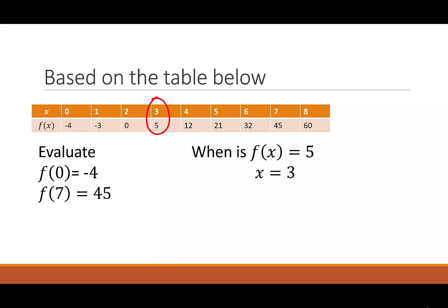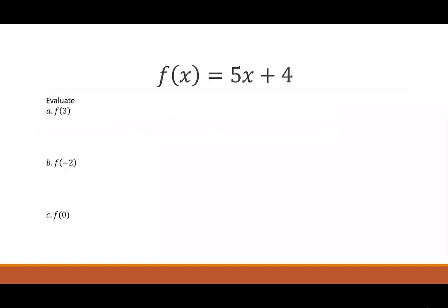When we switch to function notation, we're plugging in the values to determine our output. This time, I have f of x is 5x plus 4, and I have multiple values I want to evaluate. We'll start with f of 3. To find f of 3, I multiply 5 times 3, and then I add 4. 5 times 3 is 15. When I add 4, I get 19.